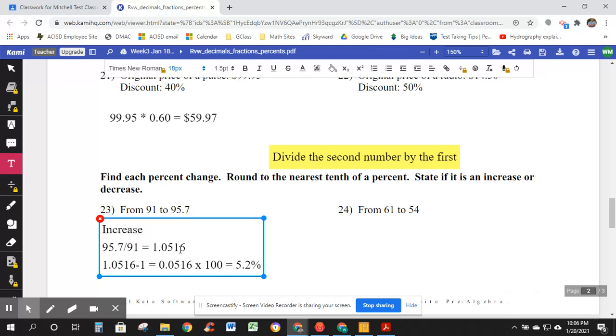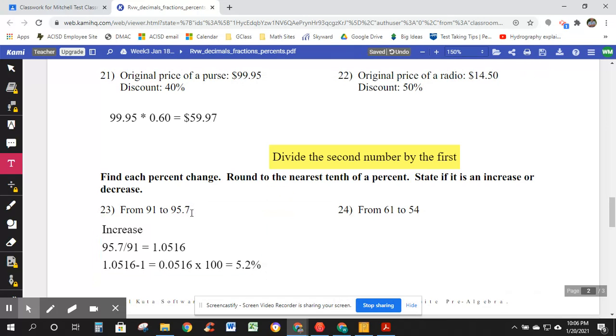Think about this a little bit. From 91 to 95.7, we saw an increase. We divided the second number by the first. 95.7 divided by 91. That gave me 1.0516. The 91 got increased to 95.7. The extra is this part. This decimal is the increase. Subtract 1 from it. You're left with just the growth. 0.0516 times 100, 5.2%.